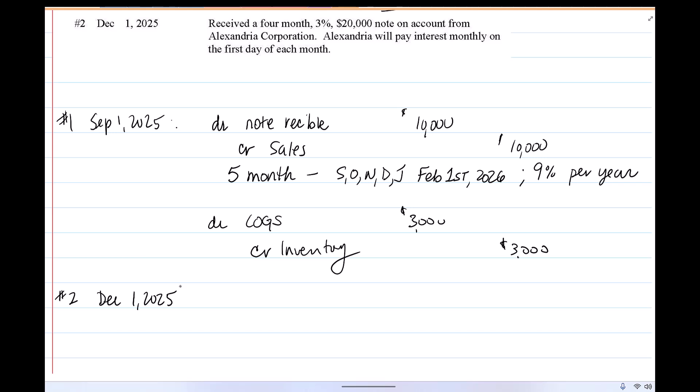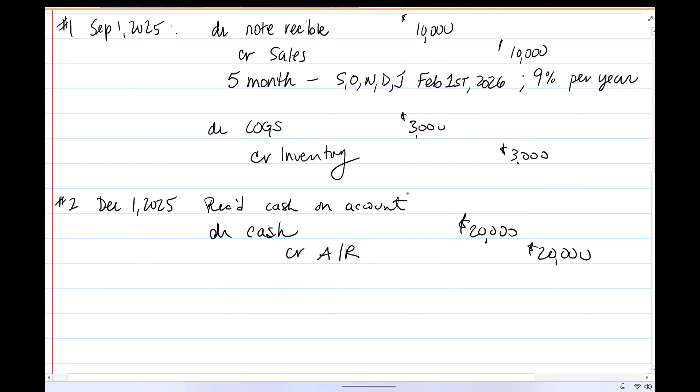So this one's a little tricky because it's saying we received a note on account. If we had received cash on account, it would have been debit cash, credit accounts receivable for the $20,000. Well, we didn't receive cash on account. We are going to remove it from accounts receivable because we received it on account, but instead we received a note. So it is note receivable as our debit, not cash for $20,000.